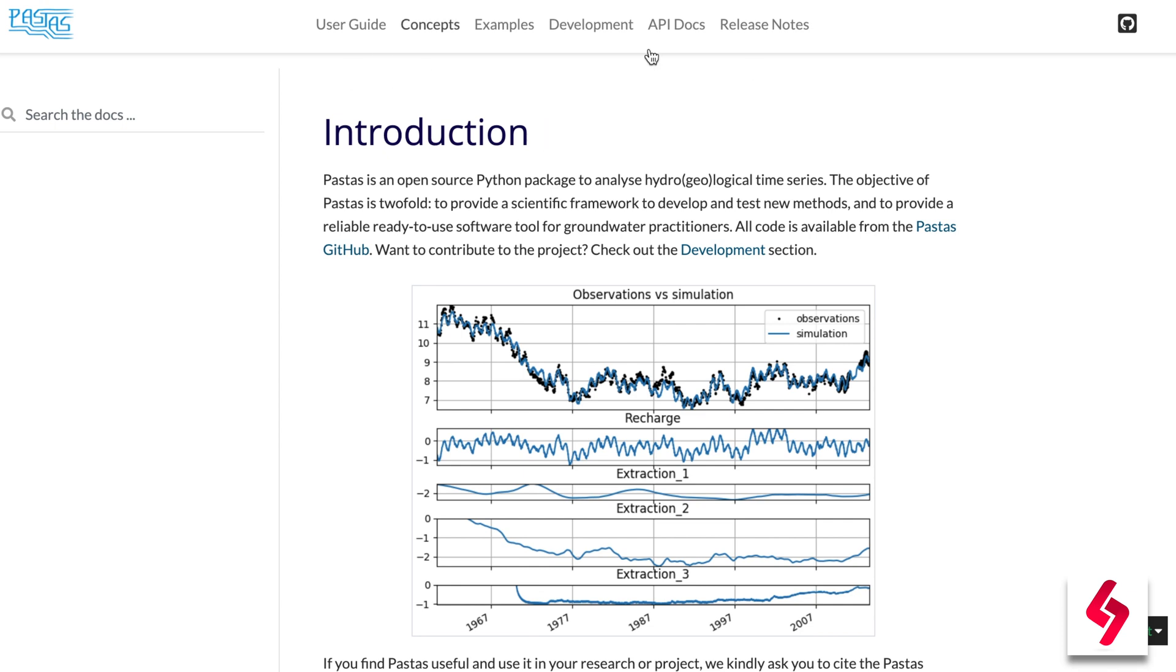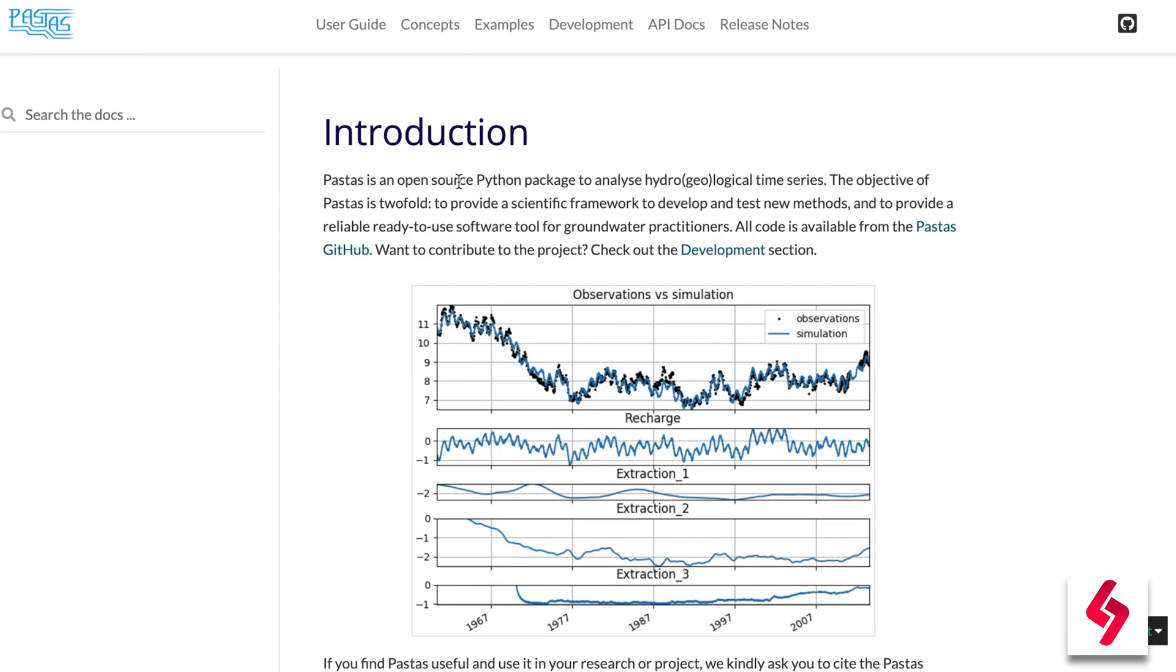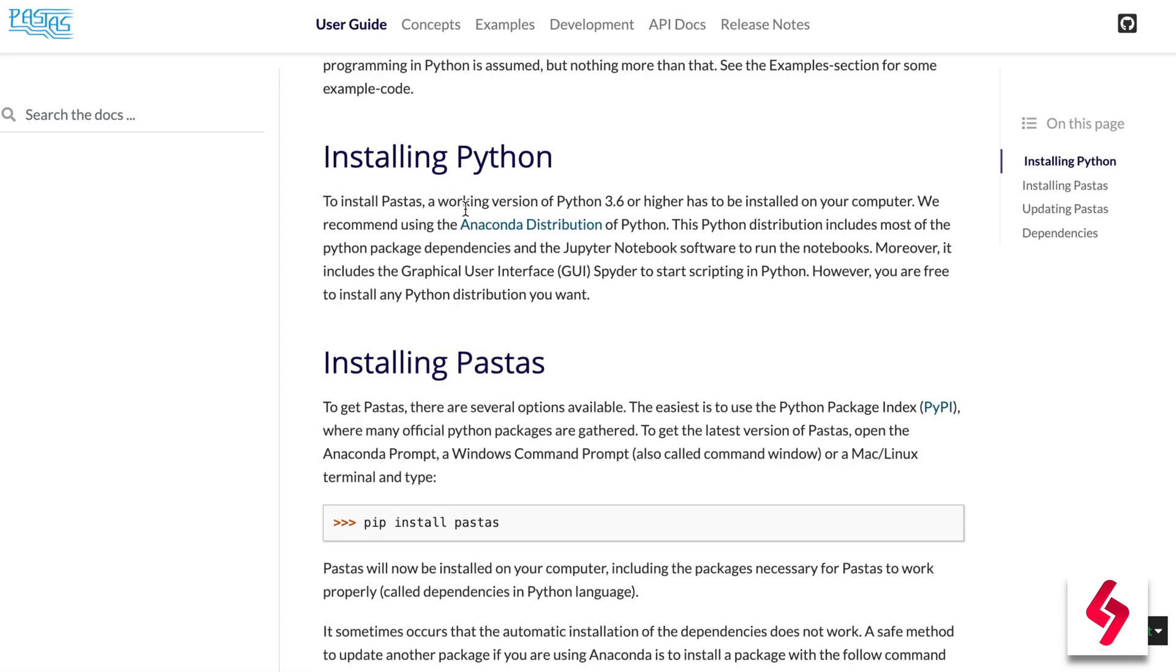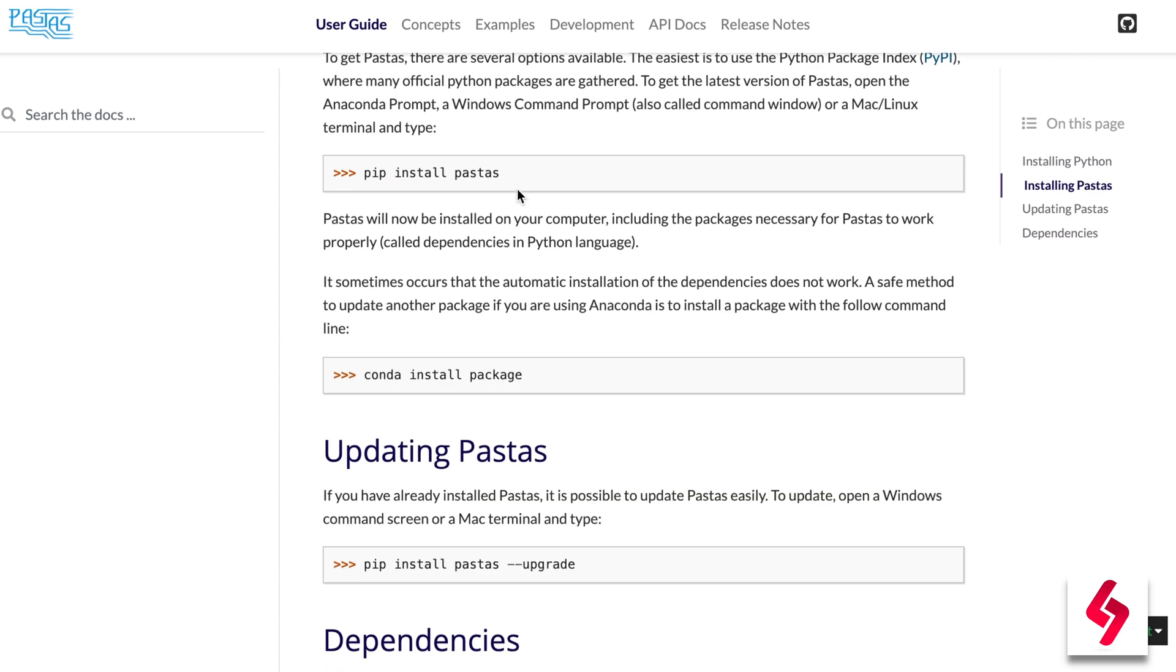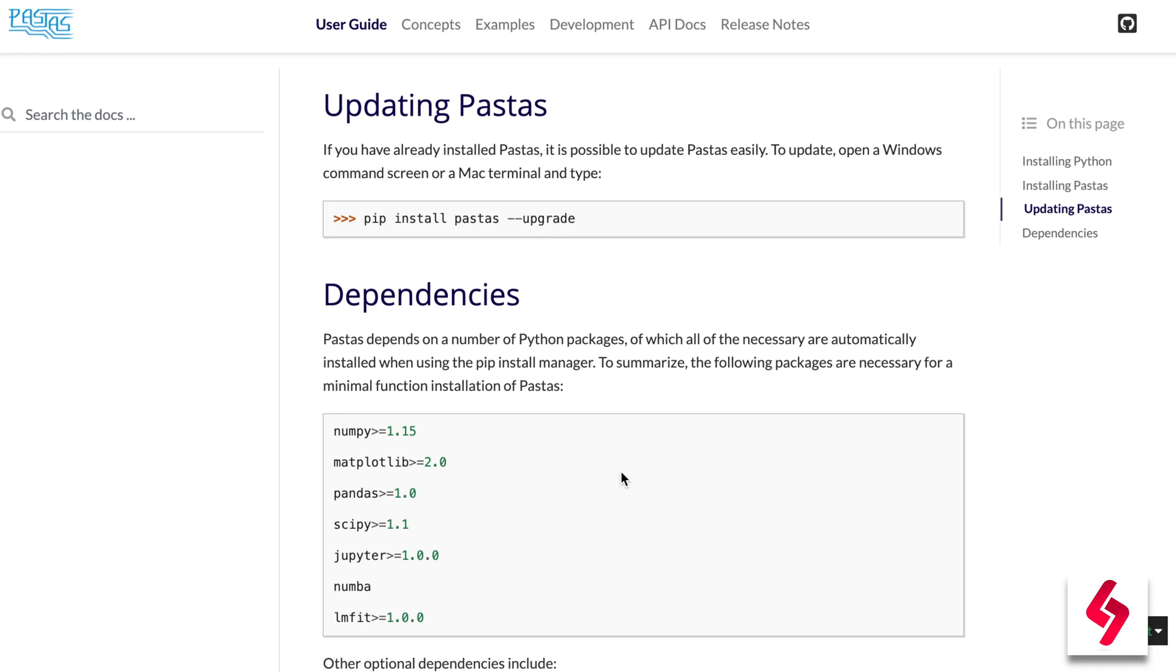Let's talk about the Pastas official website. This is the documentation we're looking into. If you look at the user guide, the installation steps are all mentioned here like pip install pastas, conda install packages. If you want to upgrade, all the dependencies information is given here.